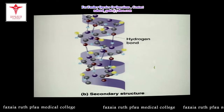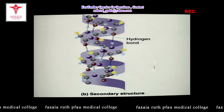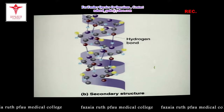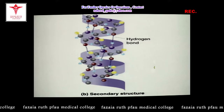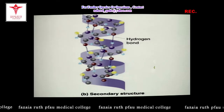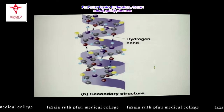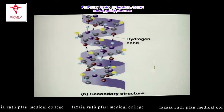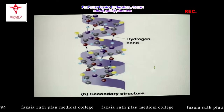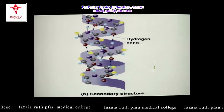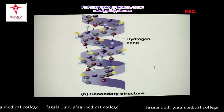In the primary structure we have only the covalent peptide bond. Now in the helical structure, you can see the backbone is formed by hydrogen bonding. The peptide bond is a bond formed between the oxygen of the carbonyl carbon and the hydrogen of the amide nitrogen — hydrogen bonding stabilizes the secondary structure of protein.